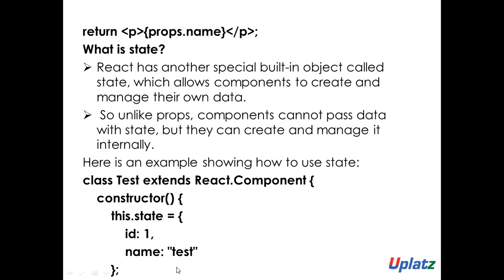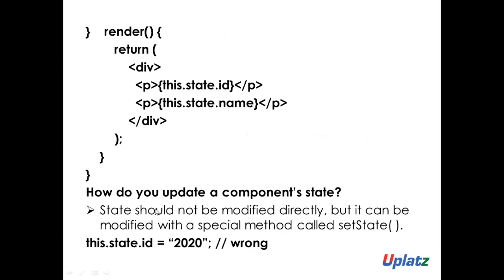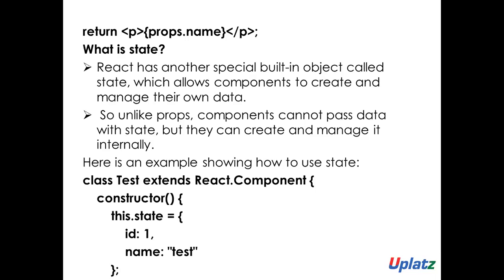I will show you the example. This is my parent component — class Test extends Component. One thing you need to keep in mind while creating a state: you need to create it inside the constructor only, like this — this.state. Inside that I have two attributes, ID and name, as key-value pairs. Now I'm going to return from that same component. this.state.id will give me 1, and this.state.name will give me the name 'test'. This is how you create state and manage it within the same component.